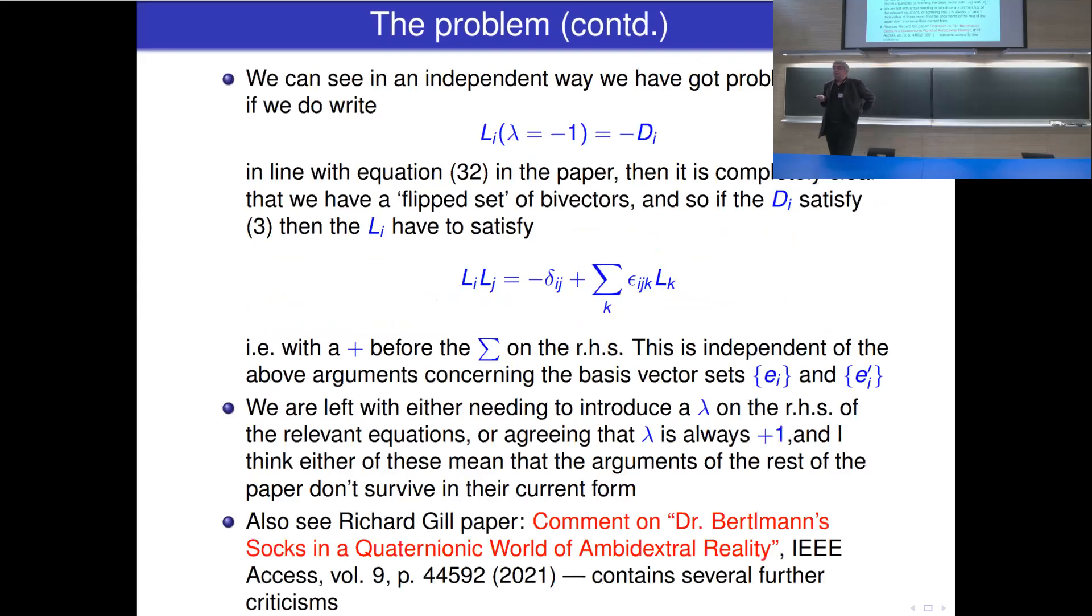So the relative orientation between the spin bivector and detector bivector sets is in fact always fixed to lambda equals plus 1, which is probably fatal for the rest of the paper, because it wanted to envisage a case where lambda flipped randomly between plus and minus 1. And we can see in an independent way that we've got problems, since if we do write, in line with equation 32 in the Joy Christian paper, that l i for lambda equals minus 1 is indeed minus d i, then it's completely clear you've got a flipped set of bivectors, and so if the d i satisfy 3, then the l i have to satisfy this with plus in front. This is effectively independent of the above arguments.